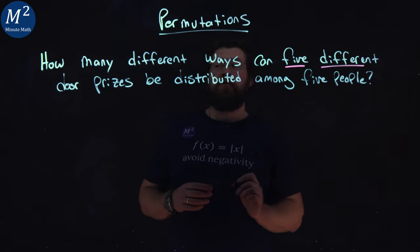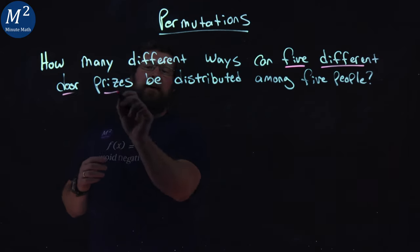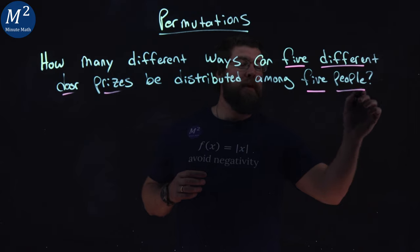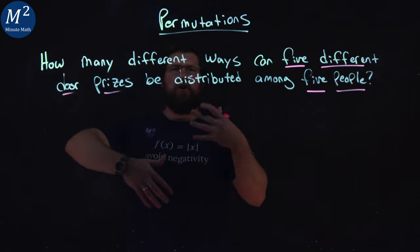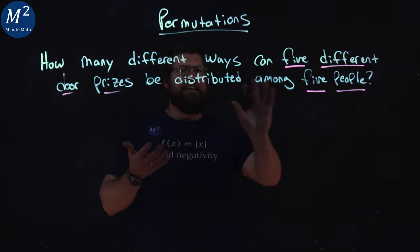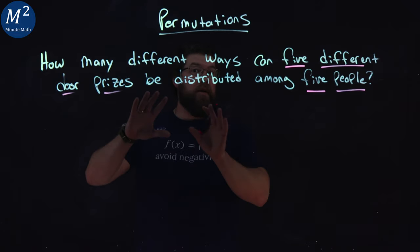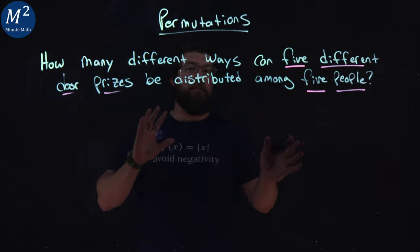We have five different door prizes and five people. So let's talk about the scenario here to get the math for it. Each person will get one door prize. There's an even amount for both.